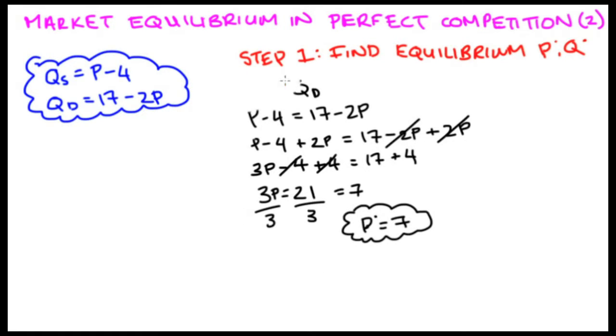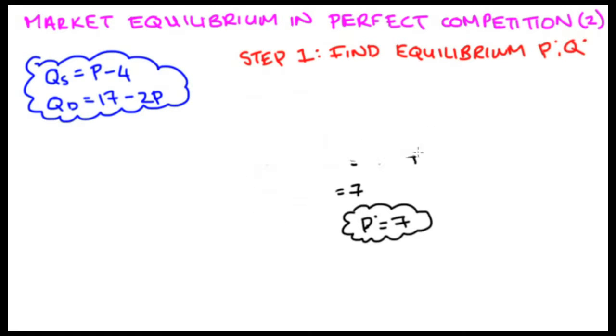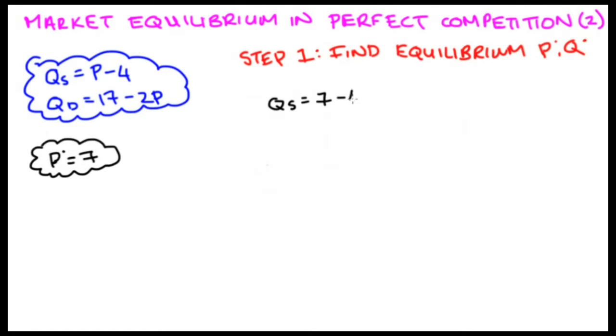Now I can substitute that price into either our demand or supply curve to get our equilibrium quantity. I'm going to do it to both, and you can see that we both turn out the same. If I substitute P is equal to 7 into our supply curve, I get quantity supplied is equal to 7 minus 4, which is equal to 3. Now, let's substitute P is equal to 7 into our demand curve. Quantity demanded is equal to 17 minus 2 times 7, which is equal to 17 minus 14, which is equal to 3.